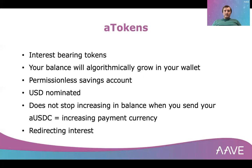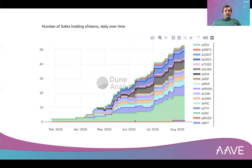You can also redirect the interest — meaning you could hold the aTokens but redirect the interest to a friend or to some other smart contract that does some interesting functionality. The aToken holding amount is growing quite substantially in terms of treasury management too. Holding aTokens is already an automated treasury management approach, which is quite interesting for funds and VCs holding substantial amounts of stable coins or other exposure assets supported by the Aave protocol.